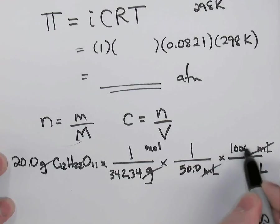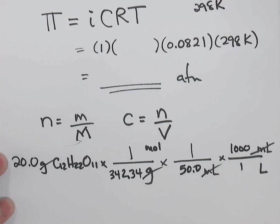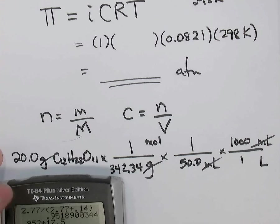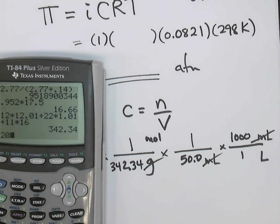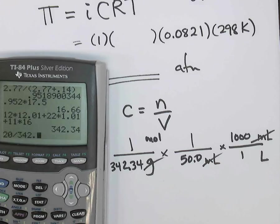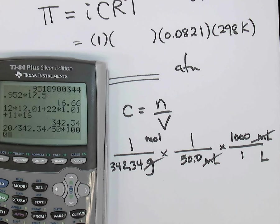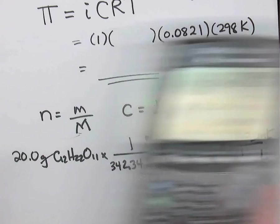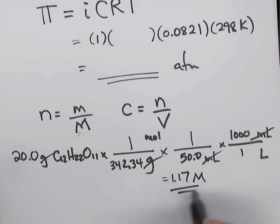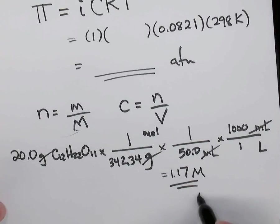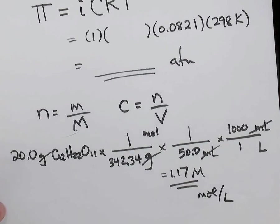So grabbing the calculator again, we have 20 grams, divided by the molar mass, divided by 50, times by 1,000. We have 1.17 molarity, or 1.17 moles per liter, if you prefer.